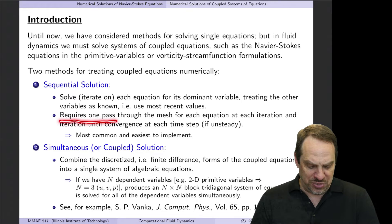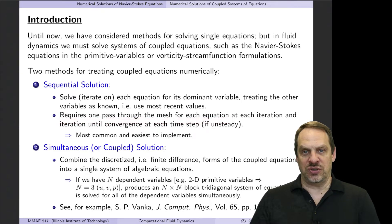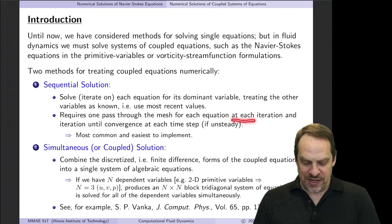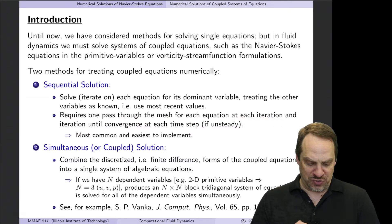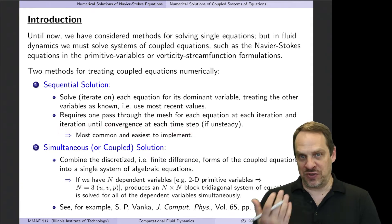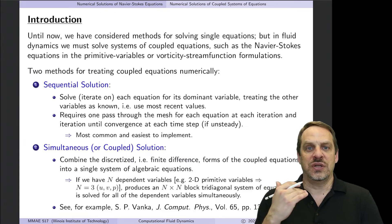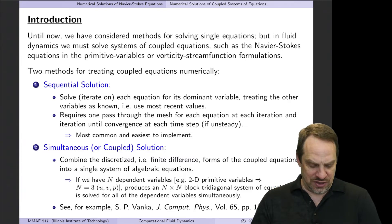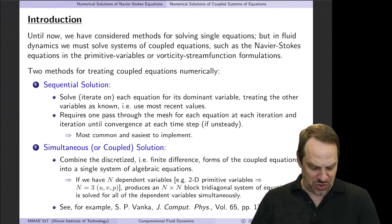This requires one pass through the mesh for each equation at each iteration. Then you iterate until convergence at each time step if it's unsteady, or you just keep iterating until you get a converged solution in the steady case. Again, this is the most common approach and the easiest to implement.